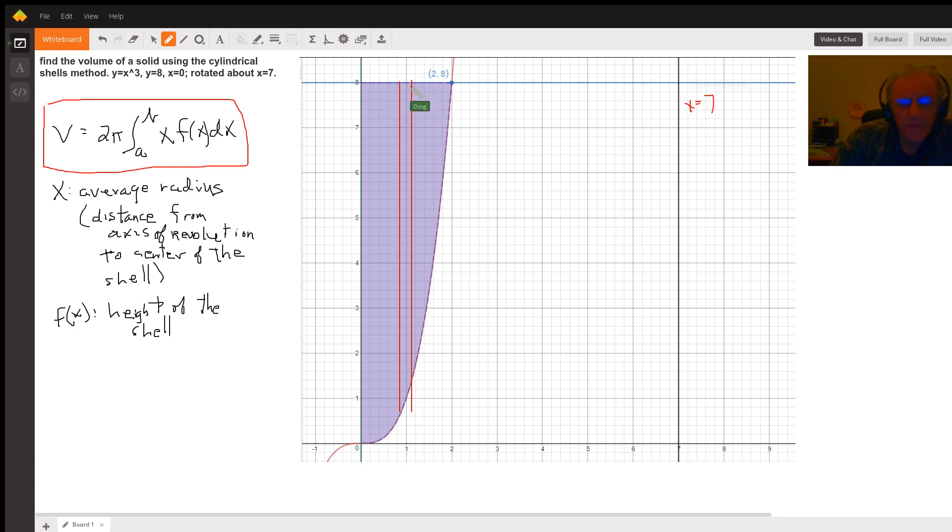for the shell method, we want to think of a rectangle, typical rectangle that's parallel to the axis of revolution, and we're going to revolve that rectangle around the axis of revolution and creating this thin shell, kind of like, think of a tin can, the shell of the tin can.